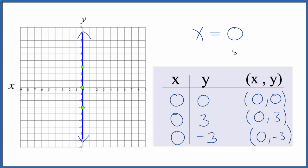If you had x equals a number, something like x equals 7, that would mean that you'd go over to x equals 7, and you'd have a vertical line. If you had x equals negative 7, the vertical line would be over here.